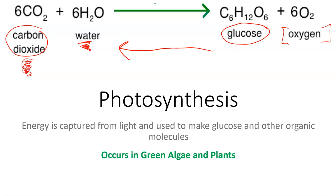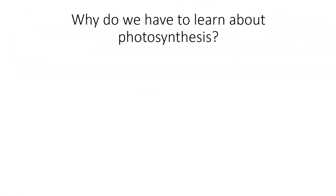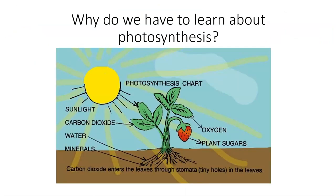We're going to talk about how we can take these small carbon molecules and small water molecules and eventually build up glucose and oxygen in photosynthesis. Photosynthesis is essentially where we capture energy from light and use it to make glucose and other organic molecules. Photosynthesis occurs in green algae and in plants.